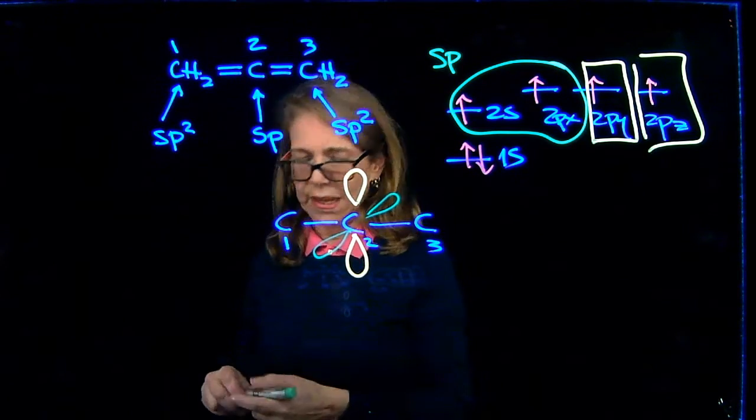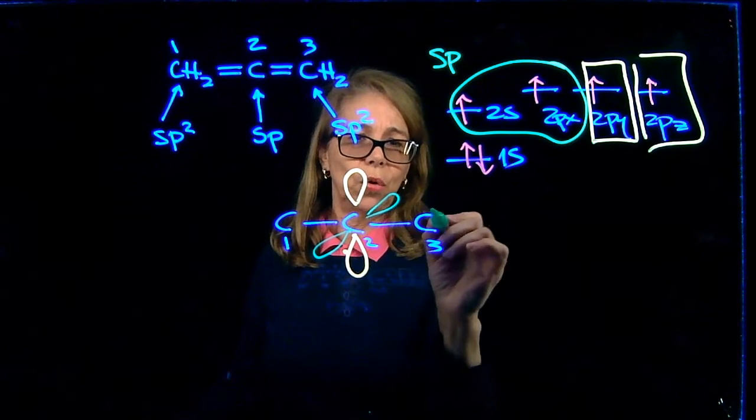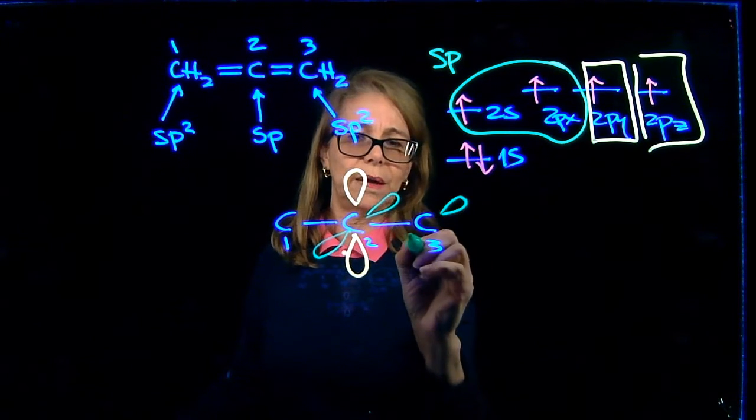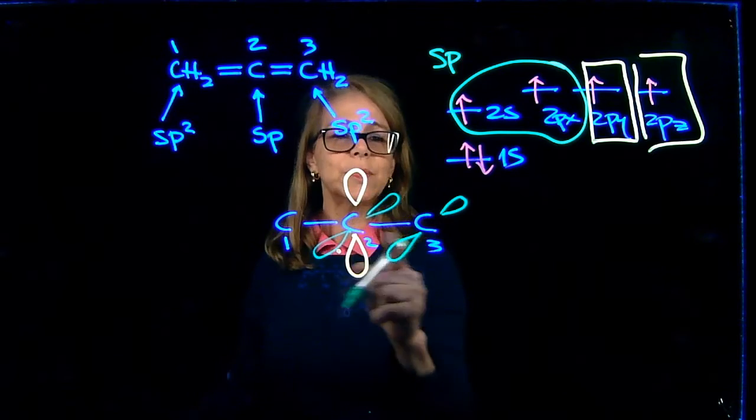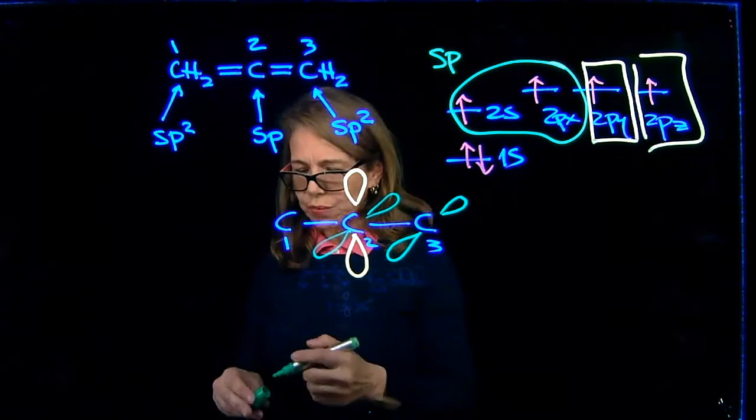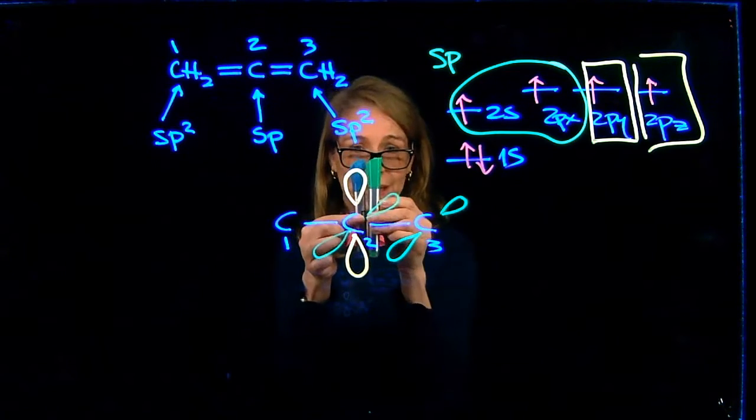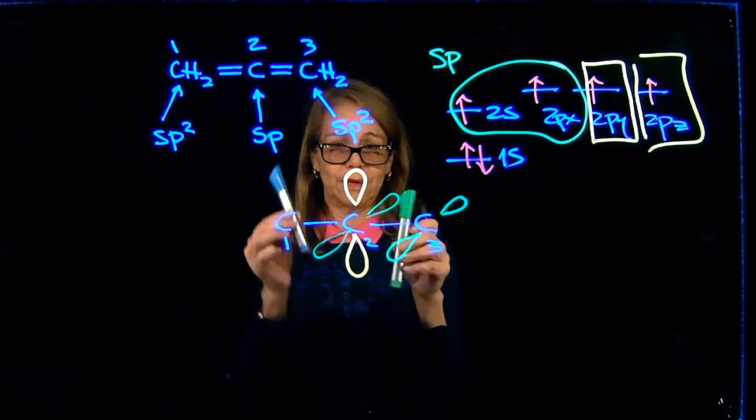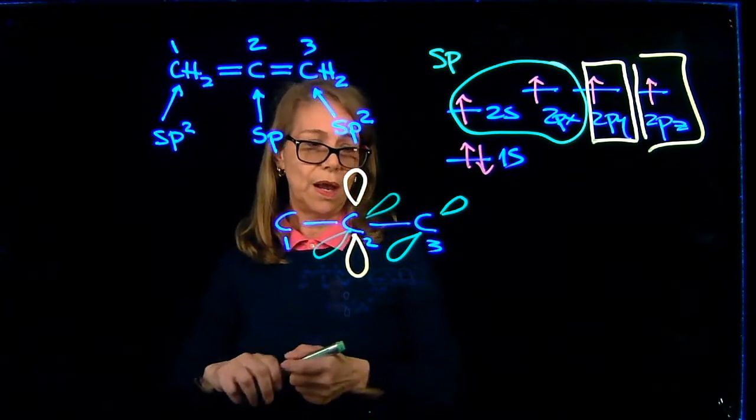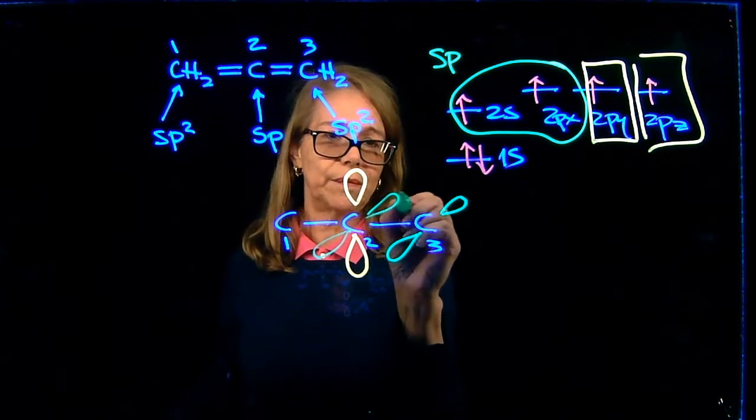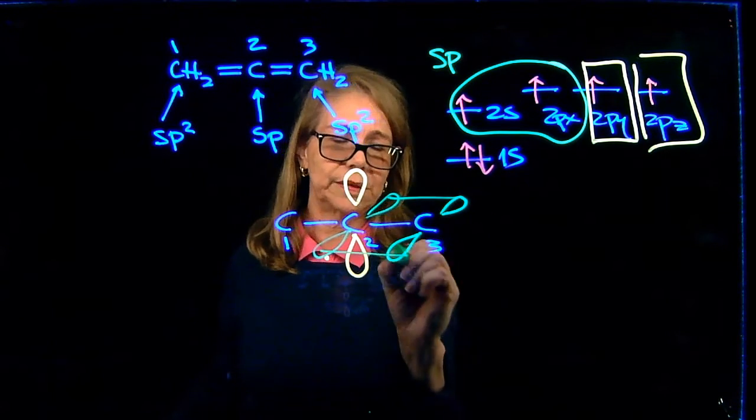That means that now to have an overlap here, the P unhybridized orbital in the SP2 model needs to be just parallel to that. Remember that? For pi bonds, the overlap is lateral. And it is like that. So they need to be parallel in the SP2.